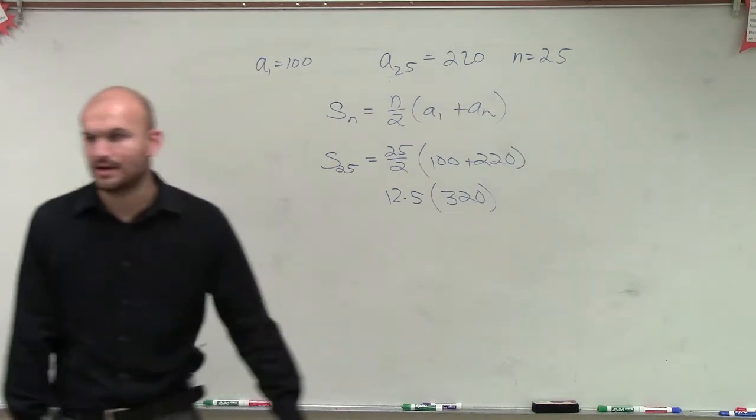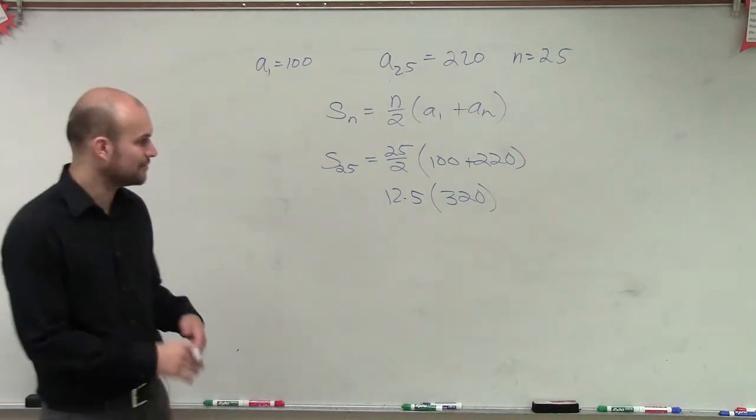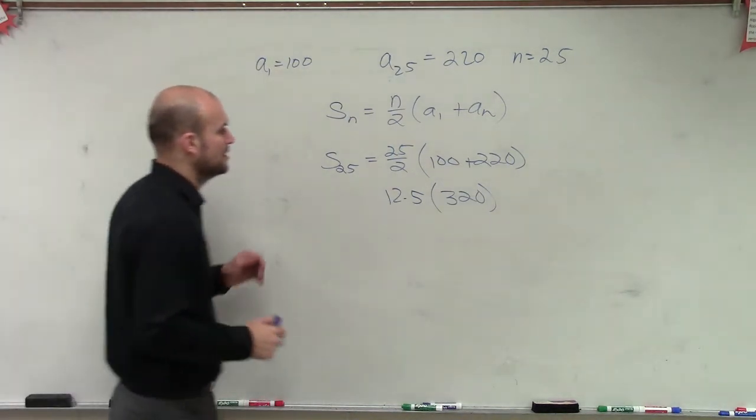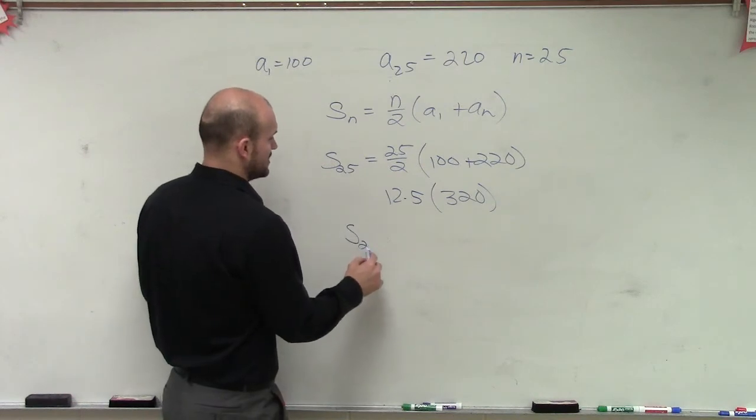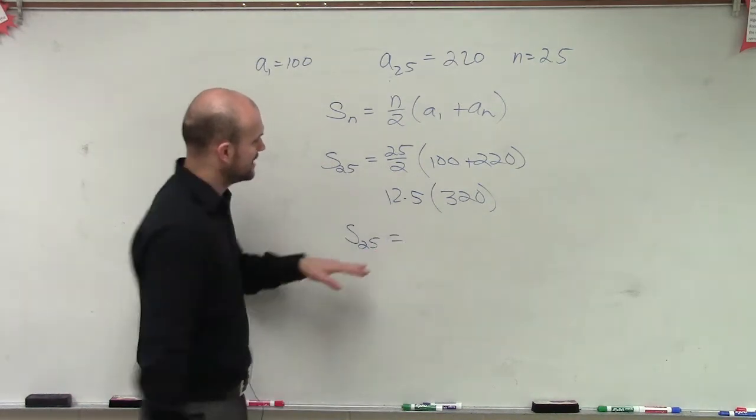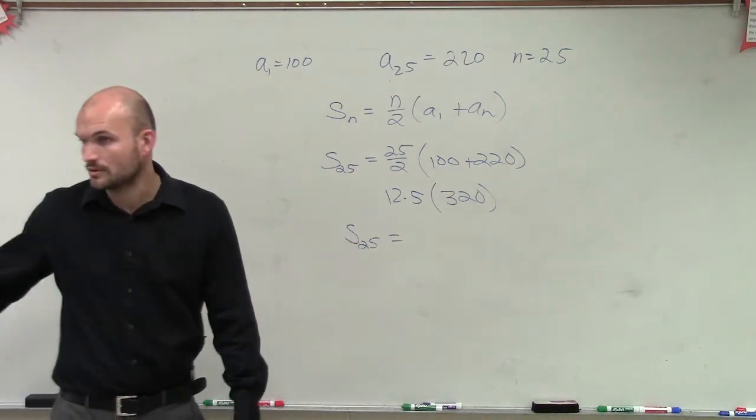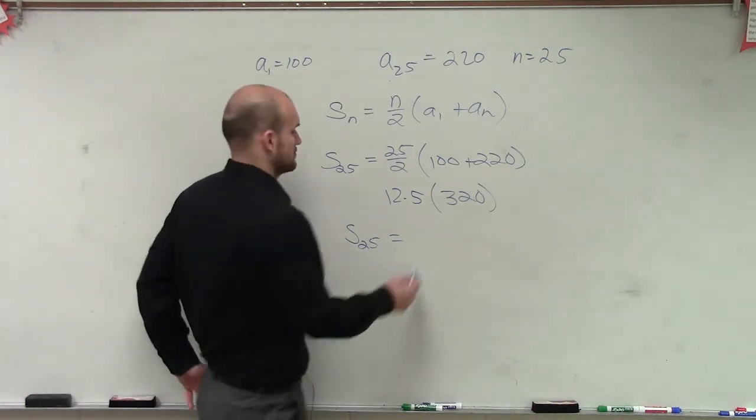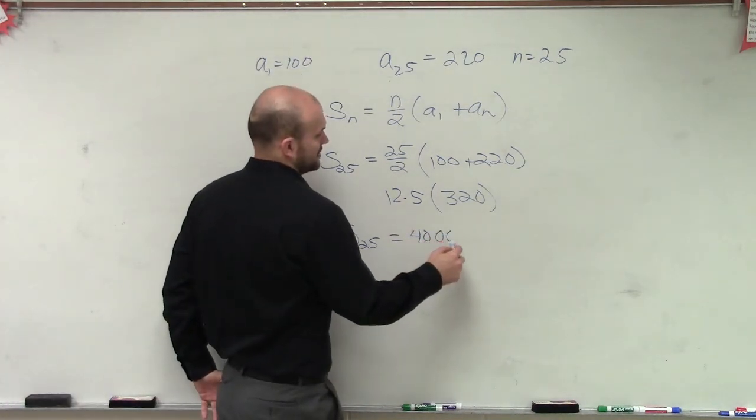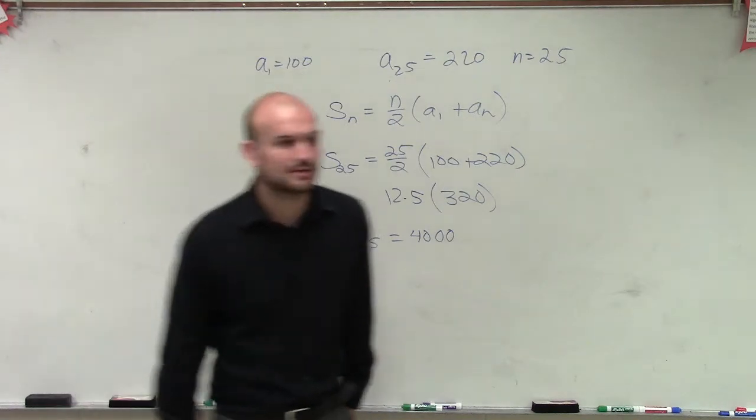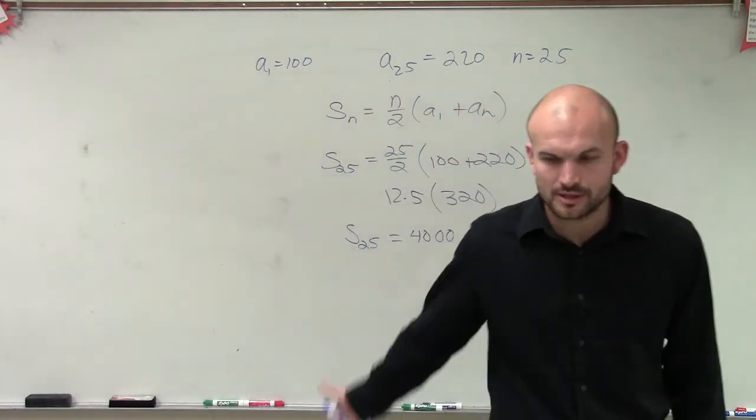I could go and do it in my head, but if anybody wants to calculate that real quick for me, 12.5 times 320. We can say s of 25 is now going to equal 4,000. I guess I probably could have done it in my head if I wanted to look at it. But there you go, that's going to be your solution.